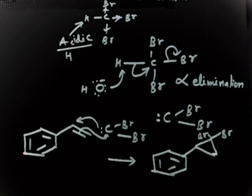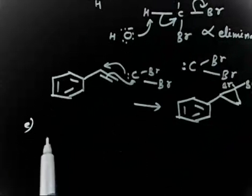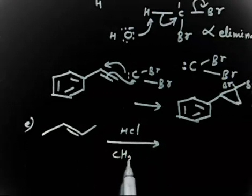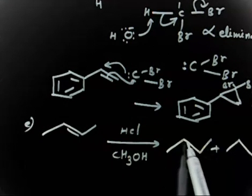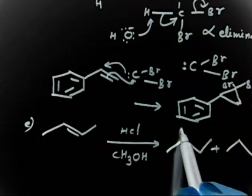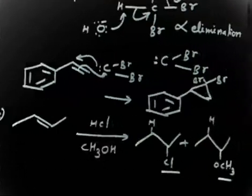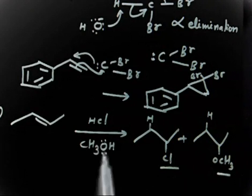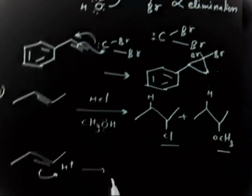Let us do one more easy problem. If you have this alkene and if it is treated with HCl, and our solvent is CH3OH — methanol — as a solvent, you are getting two products. One product has hydrogen attached and chlorine attached here; another product has OCH3 attached. You have to give the mechanism. In both cases the electrophile is hydrogen. First step is simply H⁺ attack, which generates a carbocation.